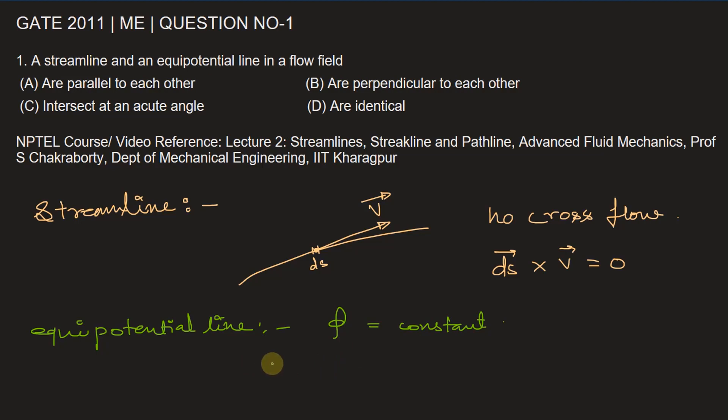In mathematical terms, dphi by dx equals ux, the velocity in the x direction. dphi by dy equals uy, the derivative along y gives velocity in that direction. Similarly, dphi by dz equals uz.